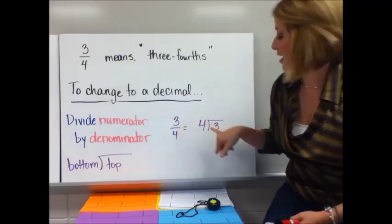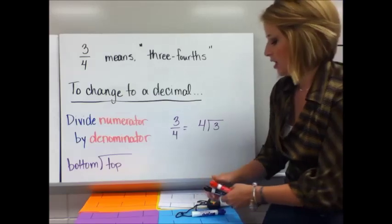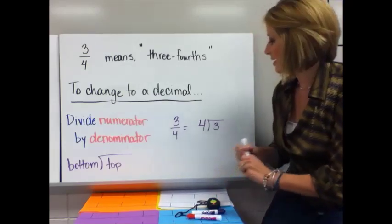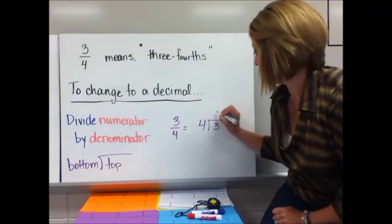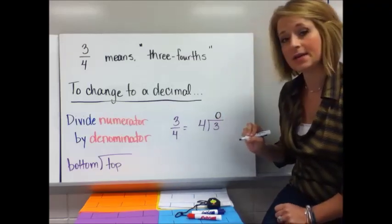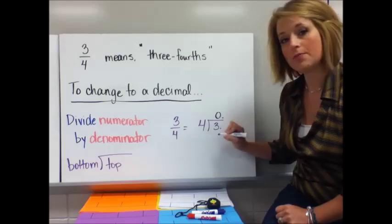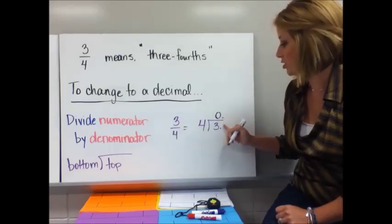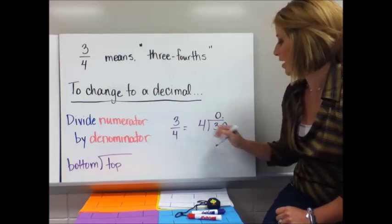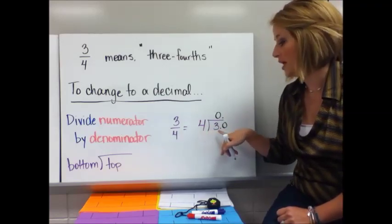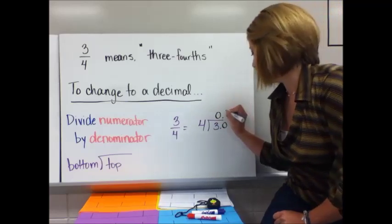I put my top number three in the division box. Four goes outside the division box. So I ask myself, how many times does four go into three? That's zero times. Since I'm out of numbers, I'm going to write in the decimal. In long division, the decimals are lined straight up, and I'm going to annex a zero. I think of it as four going into 30 now. Four will go into 30 seven times.